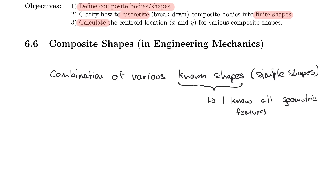For each known shape, I know the area Aᵢ, the centroid location x̄ᵢ and ȳᵢ, and therefore also x̃ᵢ and ỹᵢ from our last lecture. These are a known area and a known centroid location for each individual sub-shape.